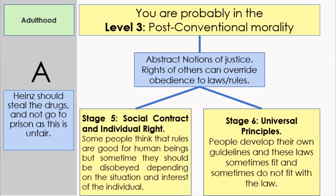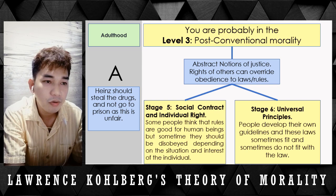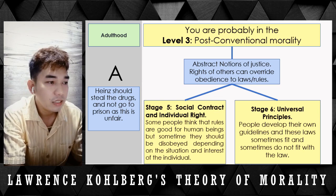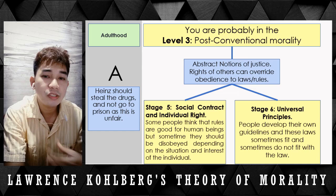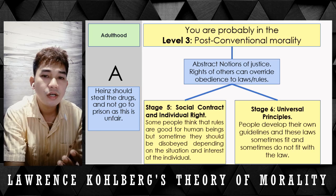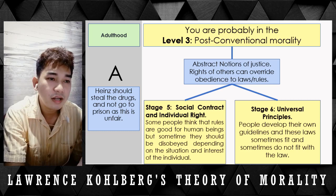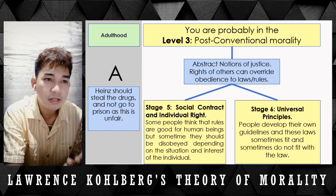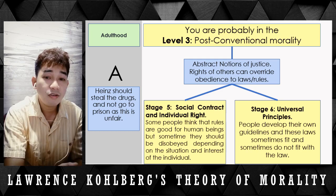Stage 6 is universal principles. People develop their own guidelines, and these may sometimes fit and sometimes not fit with the law. In the Heinz Dilemma, Heinz stole the drug and would not go to prison because for him it was unfair. In his own principles, going to prison was unfair because the drug was extremely expensive and he had offered the druggist to pay the full amount later, but that offer was not accepted. For him, it was inhumane and unequal — and that is why Heinz did what he did.